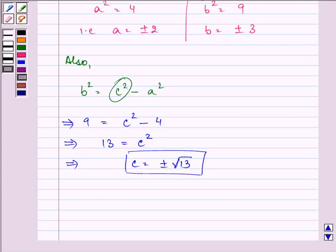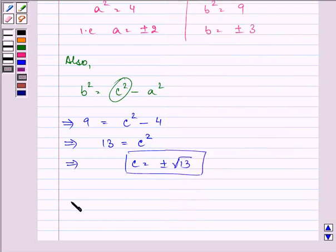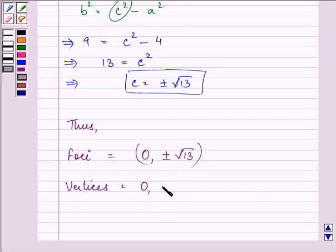Now, with the help of the known formulas, we can find out all the required values. Thus, we have foci as (0, ±√13). Vertices as (0, ±2).